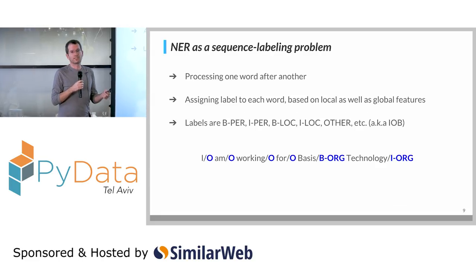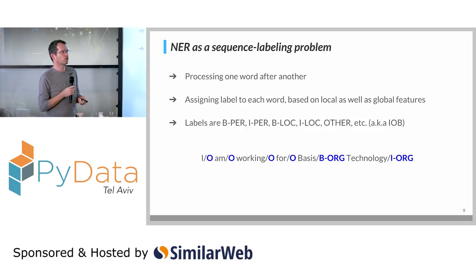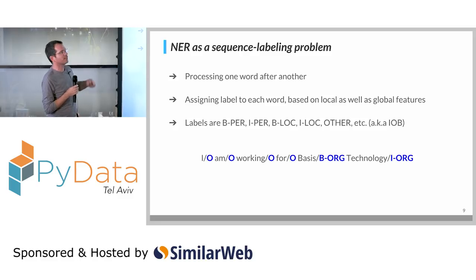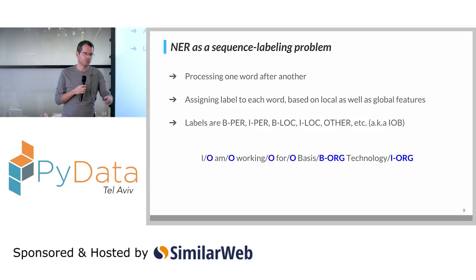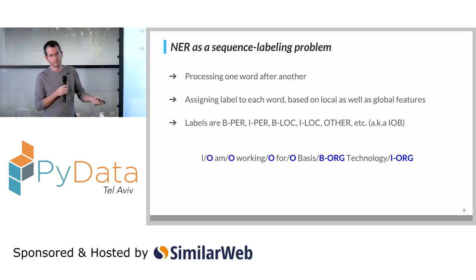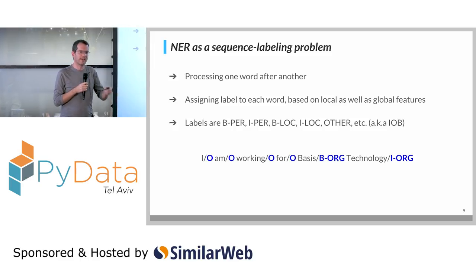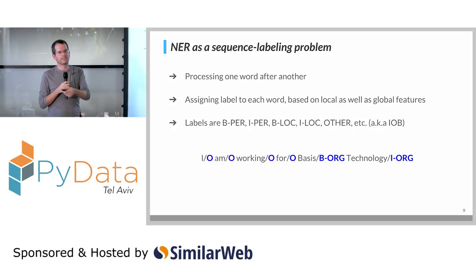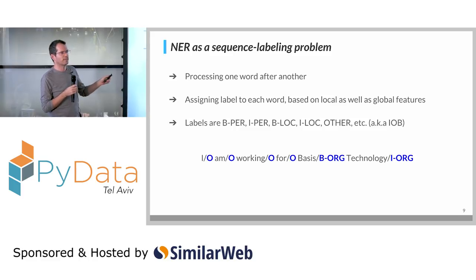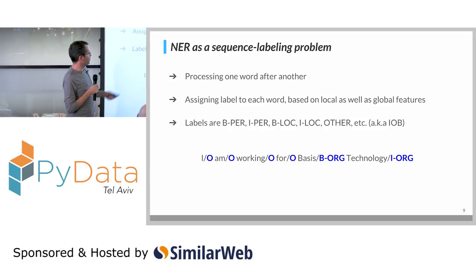In order to capture context, we use machine learning. We handle this problem as a sequence labeling problem, which means we process word by word, and for every word we predict a single label. Names may span across multiple words like Tel Aviv or New York, so we have different positional labels for every entity type.